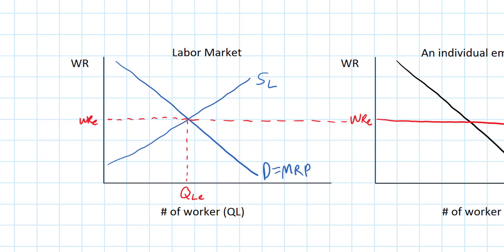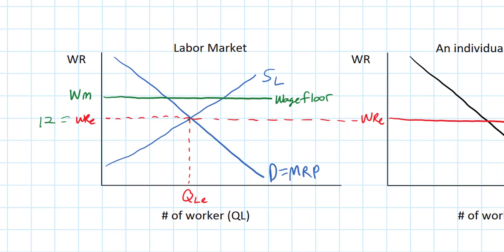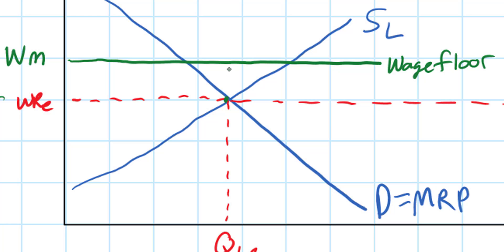Let's assume the government sets a minimum wage above the equilibrium wage rate of $12 per hour. The government sets a minimum wage of $16 per hour — above the equilibrium of $12 — establishing a price floor, or wage floor (WM). The first thing to notice is that at higher wages, fewer workers are demanded by firms. If firms were to continue employing QLE (the original equilibrium quantity), the marginal revenue product would now be lower than the wage rate that has to be paid, meaning the wage rate is higher than the MRP.